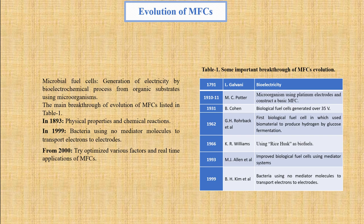In 1910 to 1911, Professor Michael Kresspotter discovered voltage generation and current delivery by microorganisms using platinum electrodes and constructed a basic microbial fuel cell. In 1966, scientist Williams used rice husk as biofuel and produced 40 milliamps at 6 volts in a biological fuel cell. A group of Korean scientists led by Kim in 1999 found that bacteria species using no mediator molecules can transport electrons to electrodes. Beginning of the 21st century, many devoted scientists tried to optimize various factors and real-time applications of microbial fuel cells.